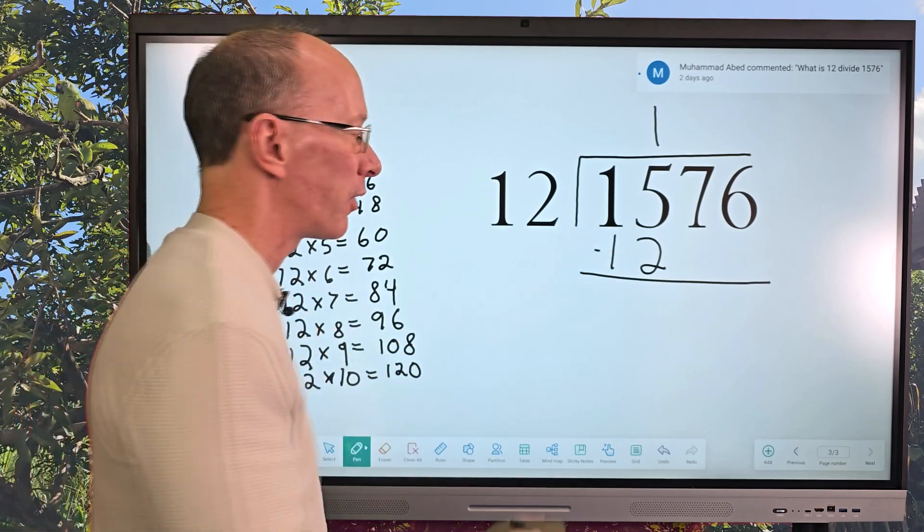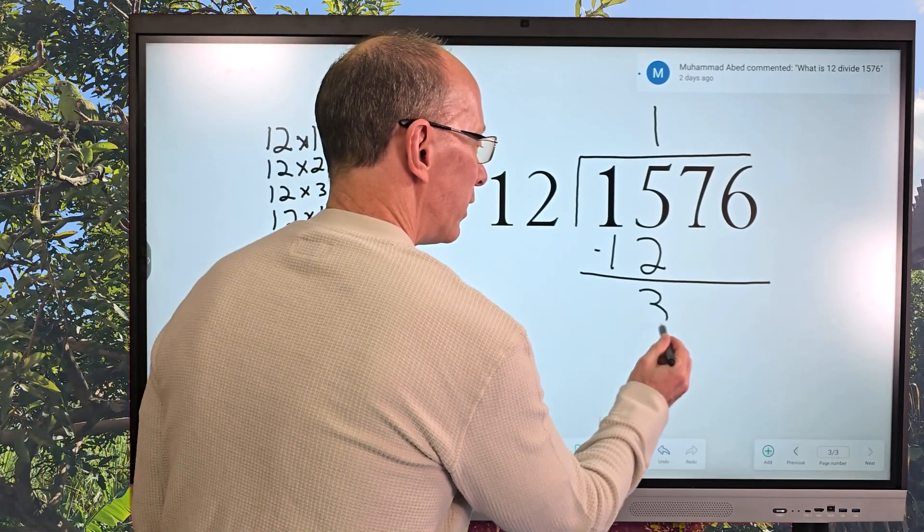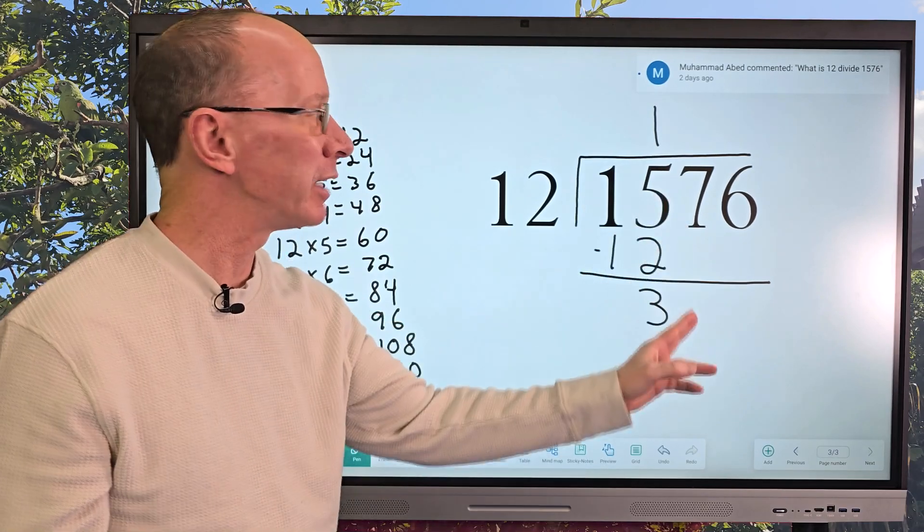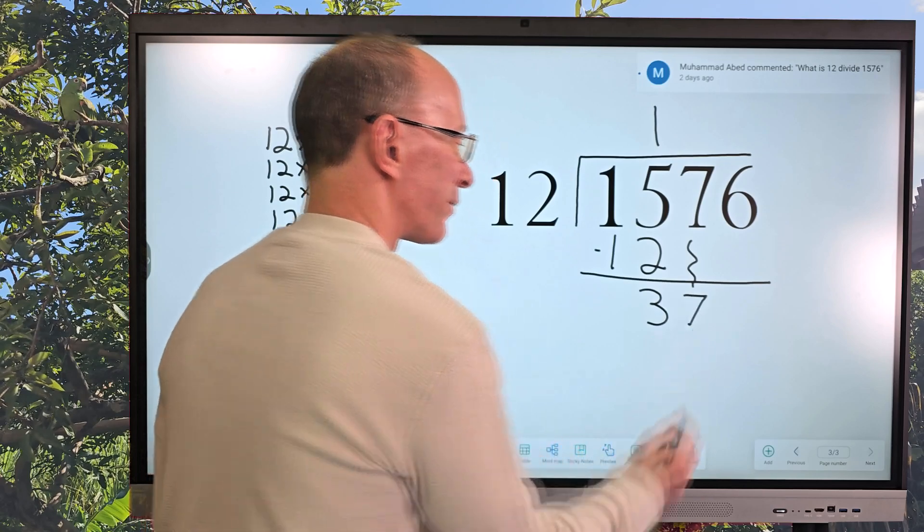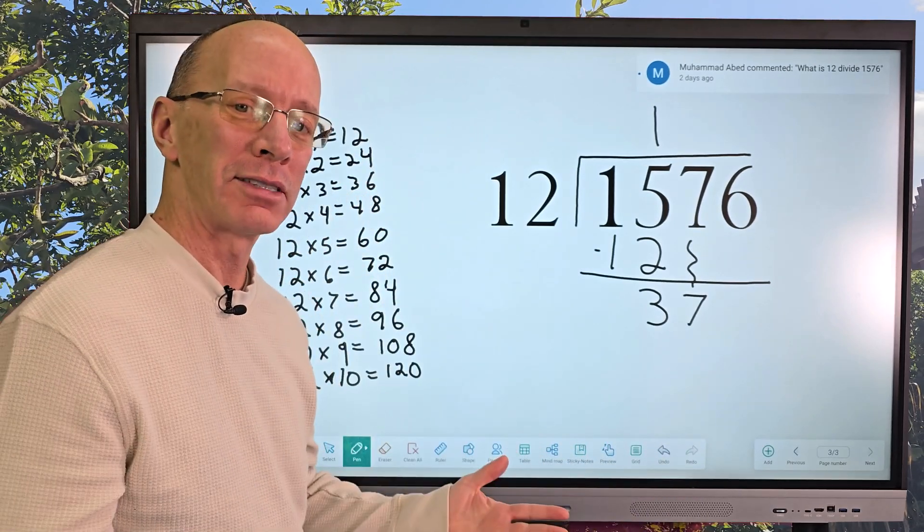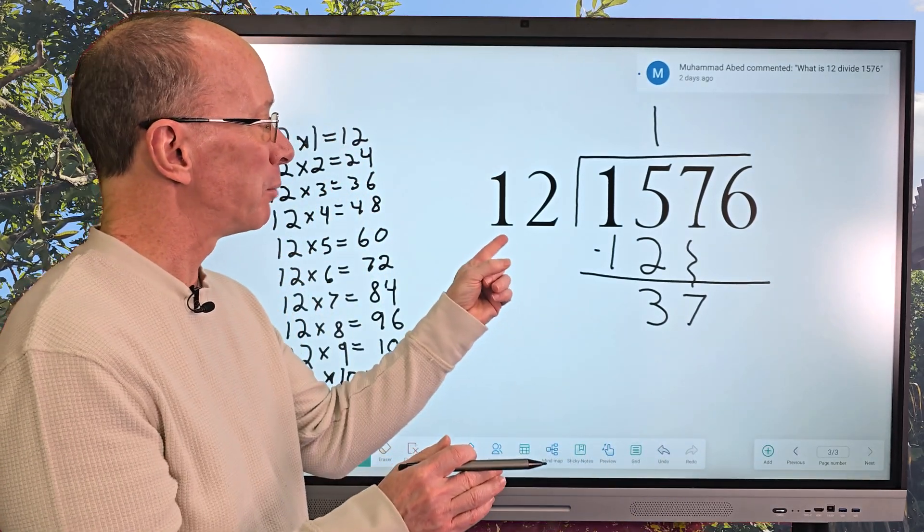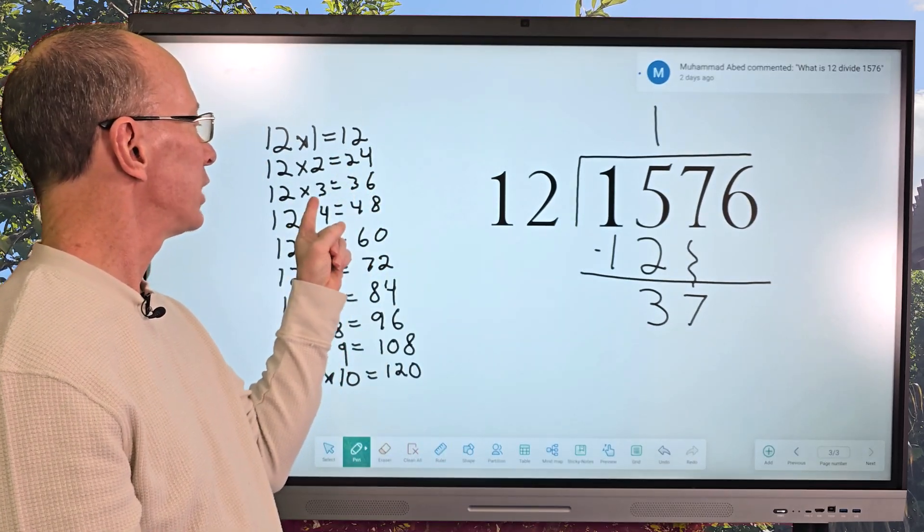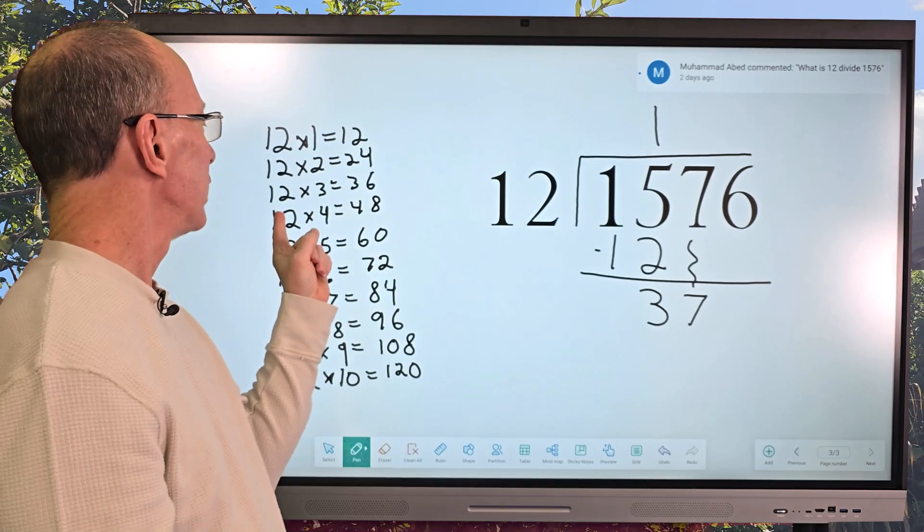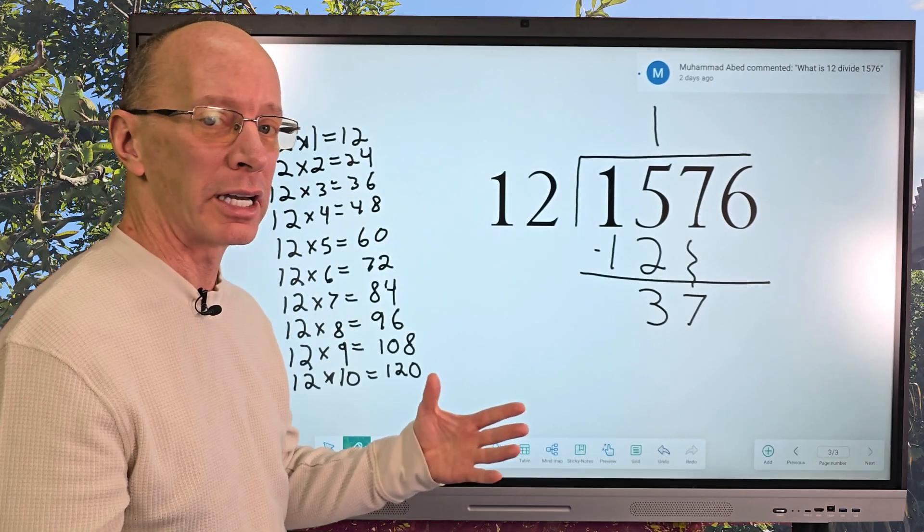Let's go ahead and subtract here. So 5 minus 2 equals 3. And then we drop the next number down, which is a 7. So bring it all the way over here. And then we start the whole process over. How many times can I put 12 into 37? Let's look over here. I have 12 times 3 equals 36. And 12 times 4 is 48. And 48 is too big.